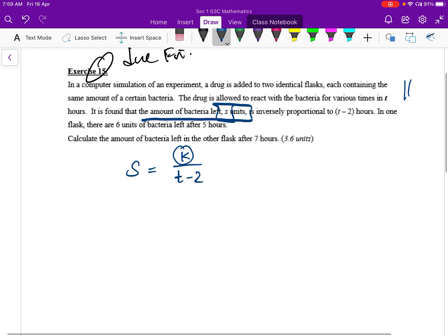S and T are our variables. Then they tell us that in one flask, there are 6 units of bacteria after 5 hours. So based on this, we can find out the value of K, which is 18. That's 3 times 6 is 18. Then now we update our formula. S equals to 18 over T minus 2. This is now our formula.